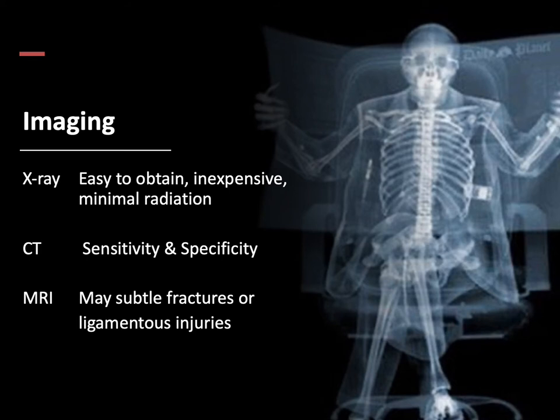Next, I'm going to talk about different imaging modalities: x-rays, CTs, and MRIs. X-ray is the easiest to obtain, can easily be done in the emergency department, and is inexpensive and provides minimal radiation to the patient. When x-ray images of the C-spine are obtained, a lateral view is the most common, usually accompanied by an anterior-posterior view and an open-mouth odontoid view.